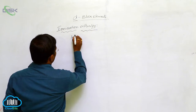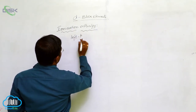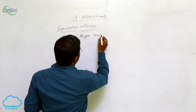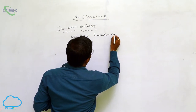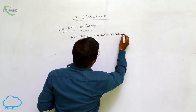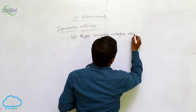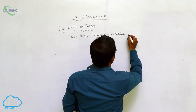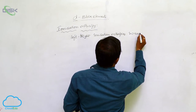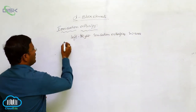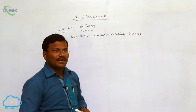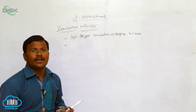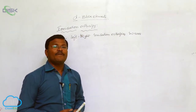As per the general concept, ionization enthalpy increases from left to right due to the decrease in atomic size. However, transition elements slightly vary in their ionization enthalpy values from one element to another, because certain factors influence them.